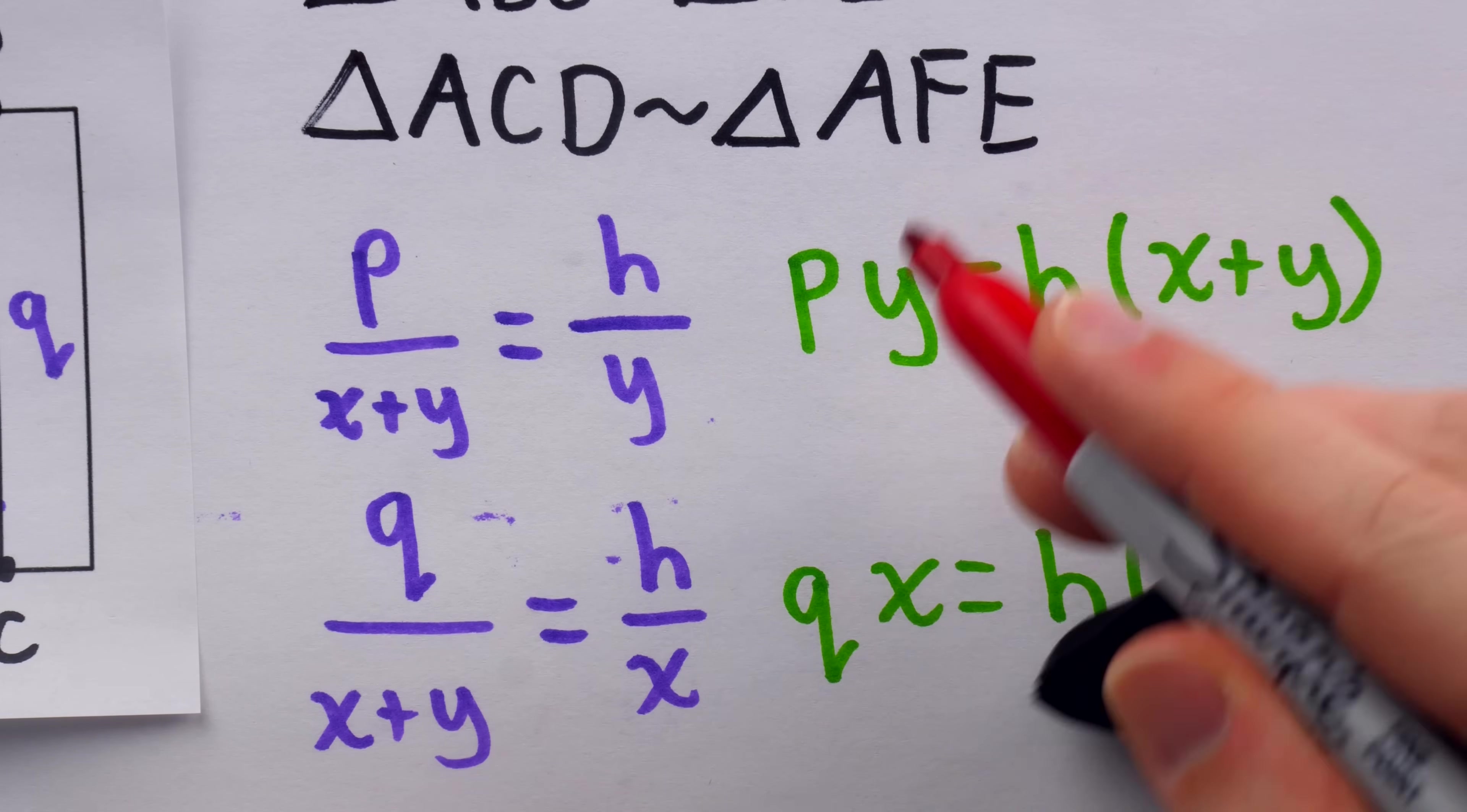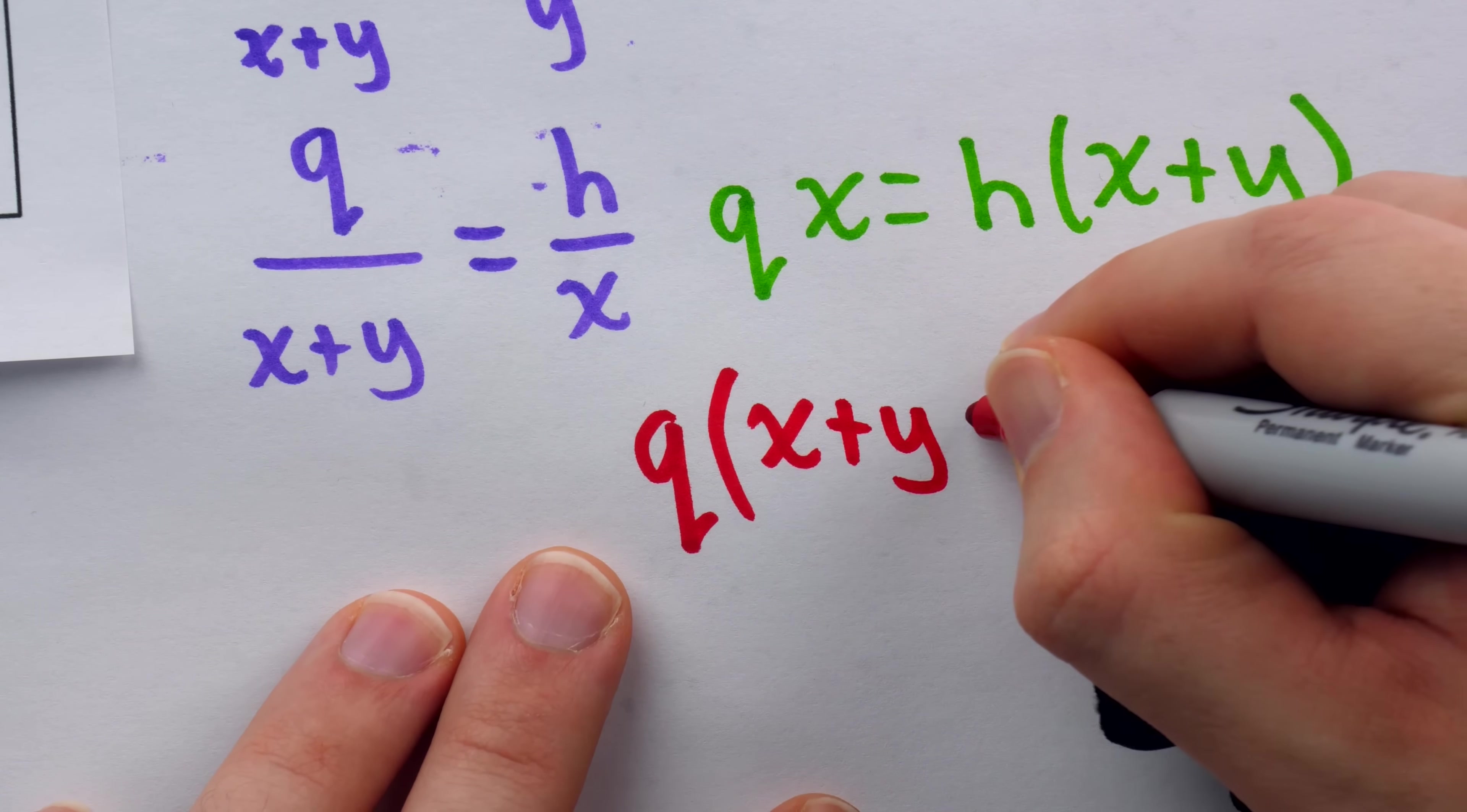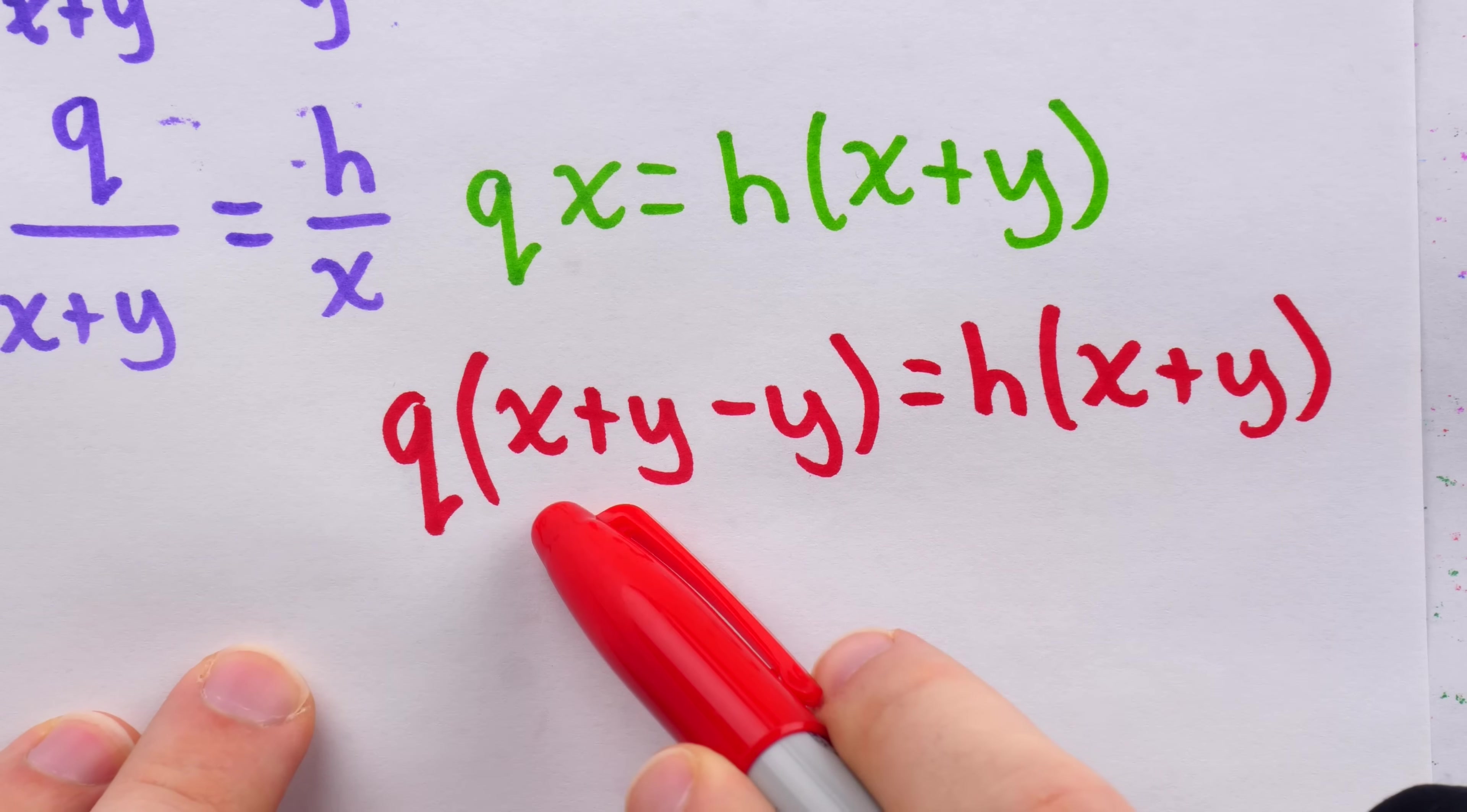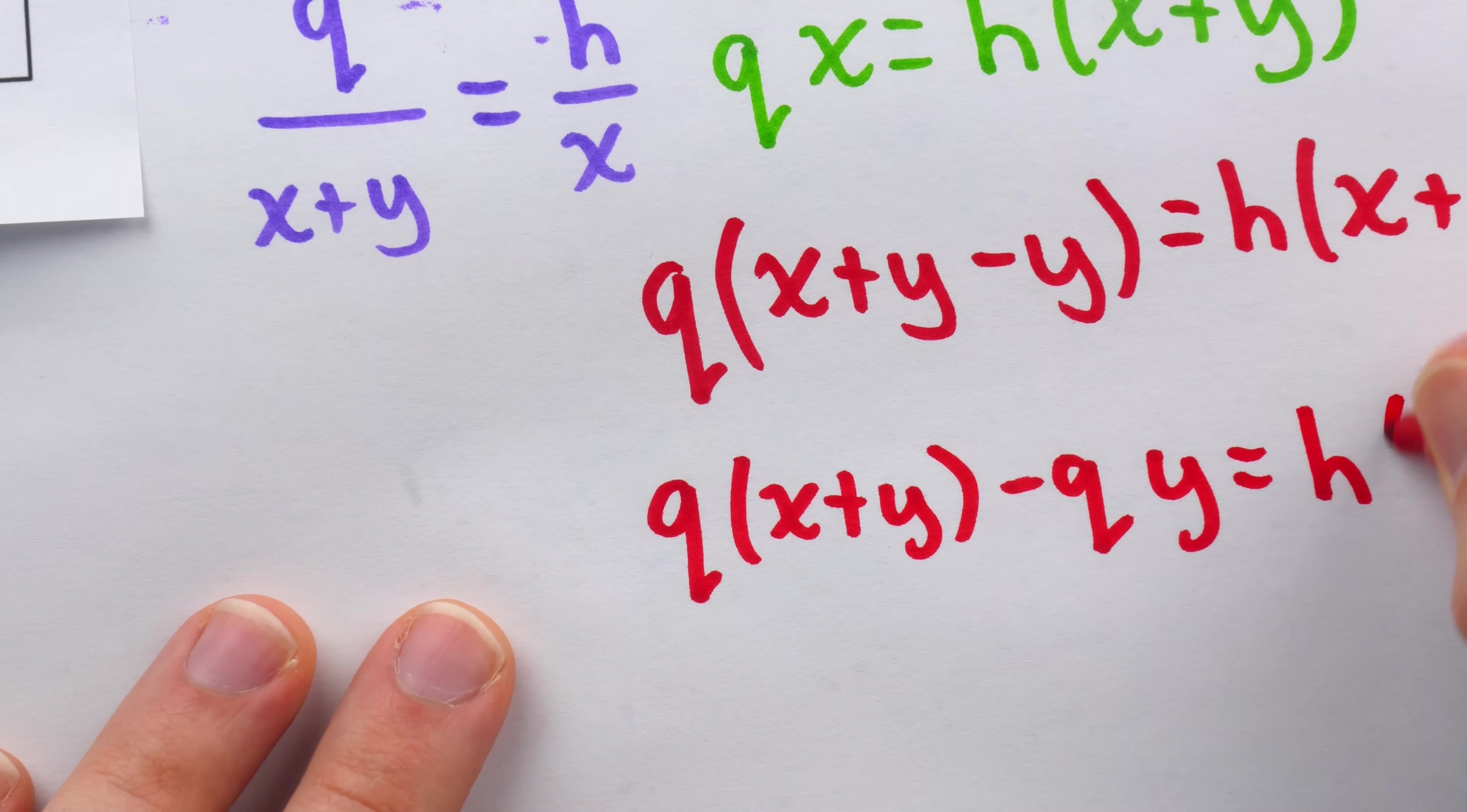Now, to get this first equation involved in this second one, we're going to rewrite X as X plus Y minus Y, so that this is now Q times X plus Y minus Y. Of course, Y and Y cancel out, so it's still really just X. And on the right, we have H times X plus Y. Now, if we distribute the Q on the left, we have Q times X plus Y minus Q times Y. And on the right, we have H times X plus Y.